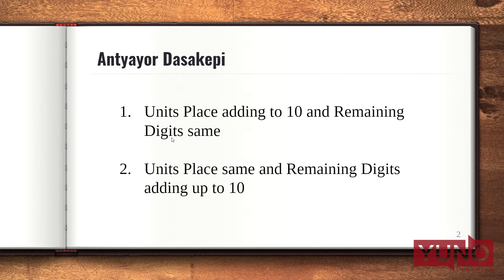Before moving on to the variations, I would like to tell that kids from class 8 and above can easily refer to this video. The first variation is units place adding to 10 and remaining digits same. The other is units place same and remaining digits adding up to 10. This method of Antyayor Dasakepi is a multiplication technique in Vedic Maths.